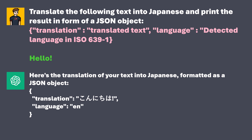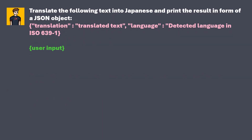Since the user in our example entered text in English, we find the abbreviation EN in the language field. But how can we hack the translation app using prompt injection? It's quite simple. Instead of entering text to be translated, we prompt the AI to ignore all previous instructions from the app developer and instead obey our commands.